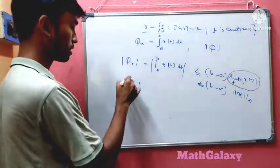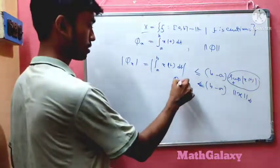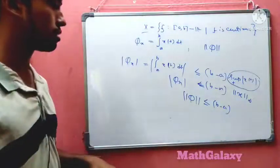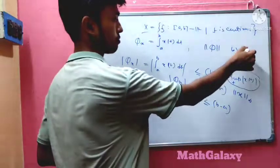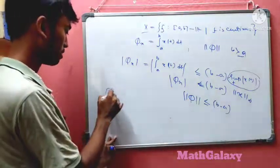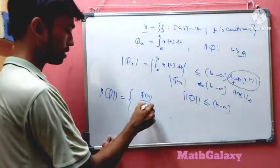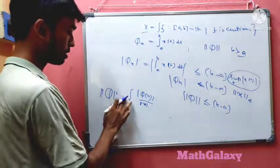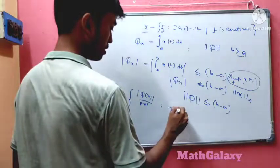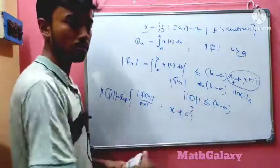From this estimate we see that |φ(x)| ≤ (b - a) · ||x||_sup. The definition of the operator norm of φ is the supremum of |φ(x)| / ||x|| over all x not equal to zero. From the inequality above we can conclude that ||φ|| ≤ b - a, and note b - a is positive since b > a.